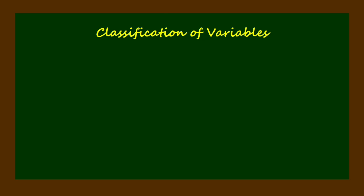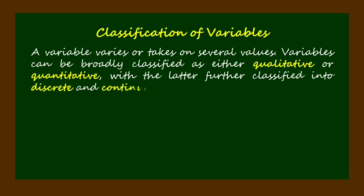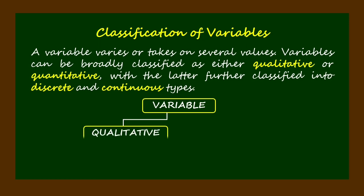A variable varies or takes on several values. Variables can be broadly classified as either qualitative or quantitative, with the latter further classified into discrete and continuous types. To further illustrate how we classify variables, we may refer to the preceding classification flow diagram.